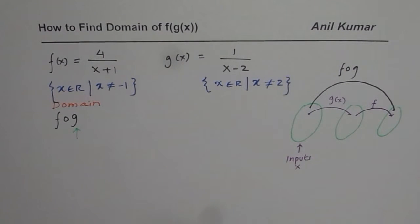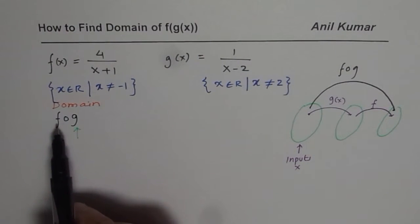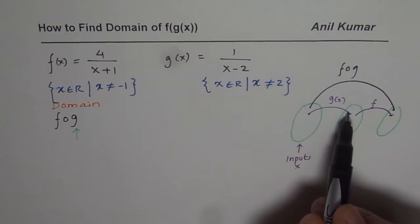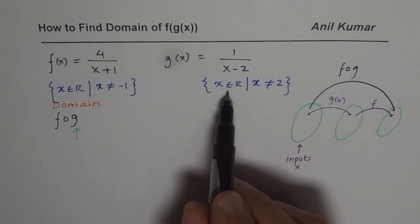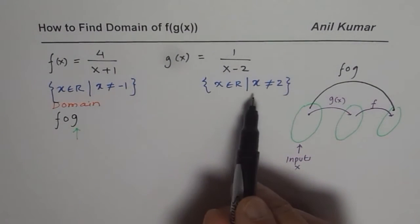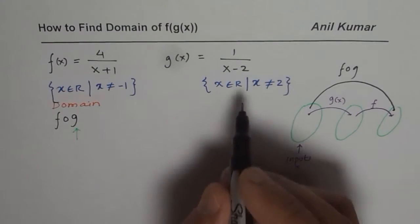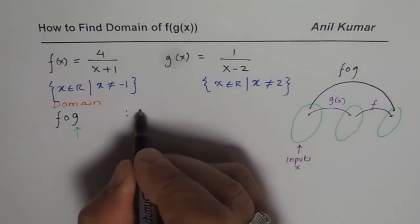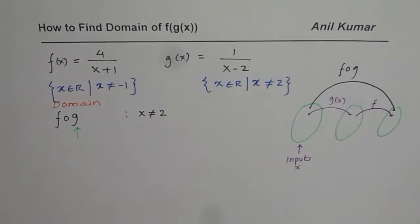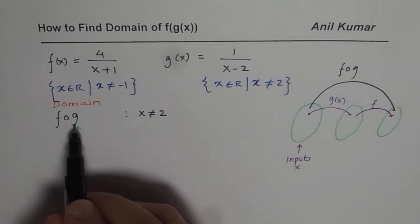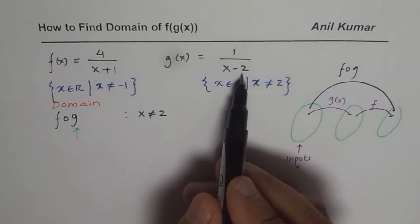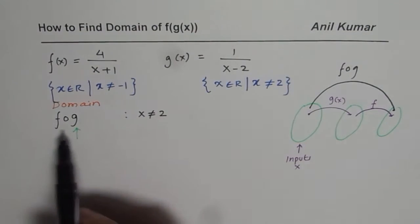Now clearly, if you are finding the domain of f∘g, the first restriction comes from g(x). Since the restriction on g(x) is that x cannot equal 2, that becomes the first restriction on the composite function. All restrictions on the inside function g(x) = 1/(x-2) will apply to the composite function.